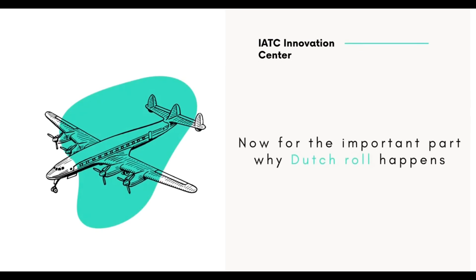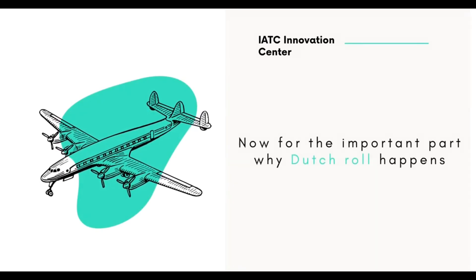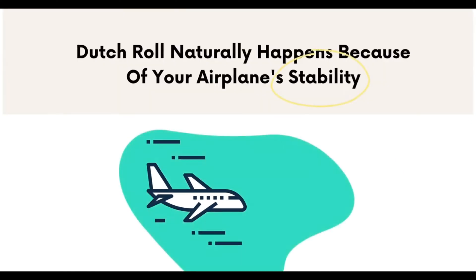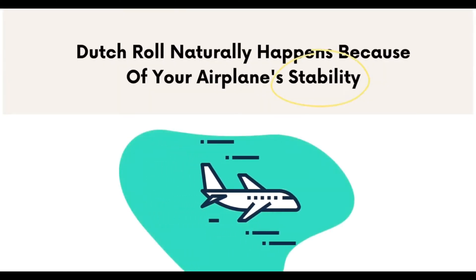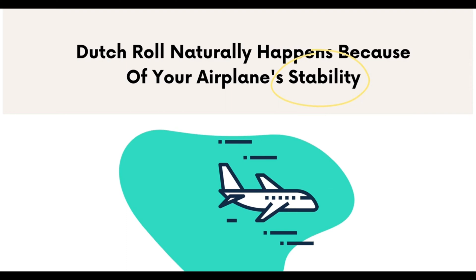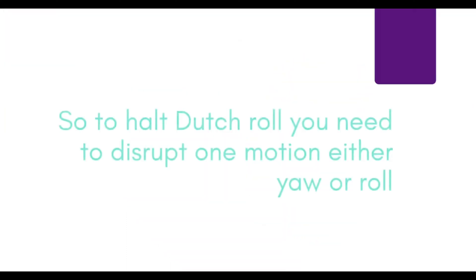Now, for the important part as to why the Dutch Roll happens. The Dutch Roll naturally happens simply because of your airplane's stability. So, to stop the Dutch Roll, you need to disrupt one motion — either the yaw or the roll.